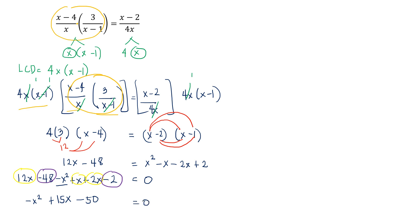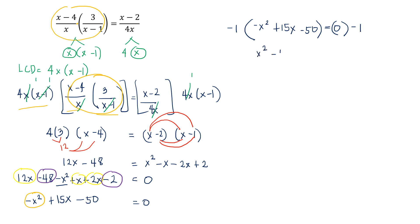We have a trinomial. To make the leading coefficient of x squared positive, we multiply both sides by negative 1 and distribute it to each term inside the parentheses. When you multiply a term by negative 1, you just change the sign — all negatives become positive and all positives become negative. So the trinomial becomes x squared minus 15x plus 50 equals 0.